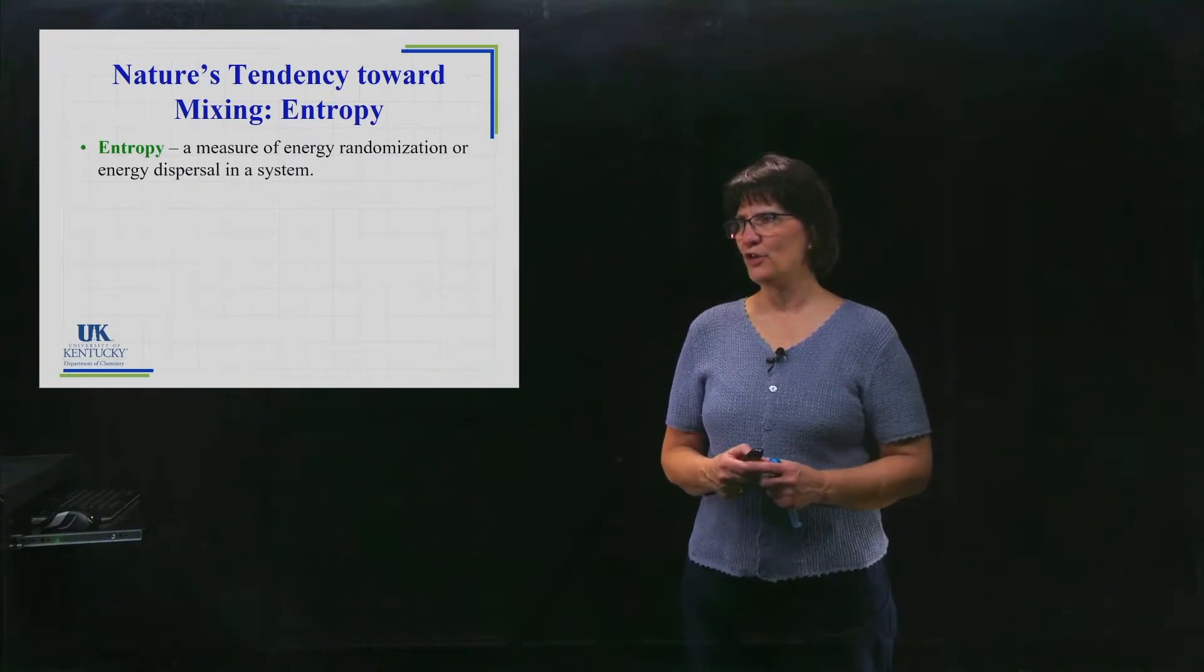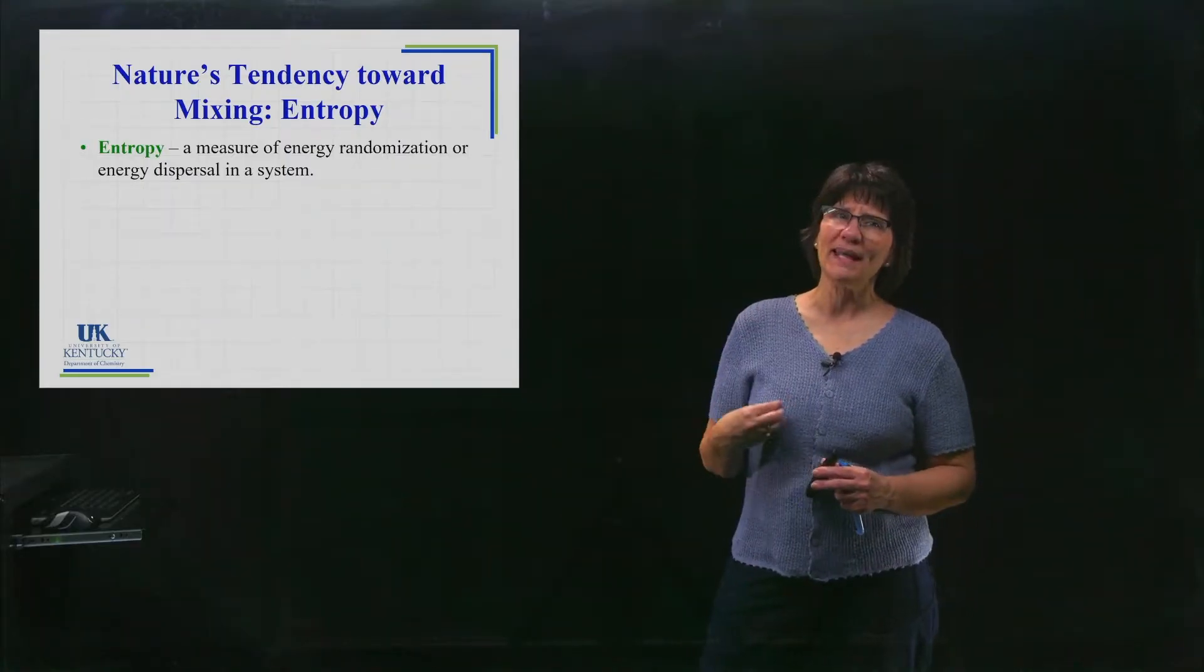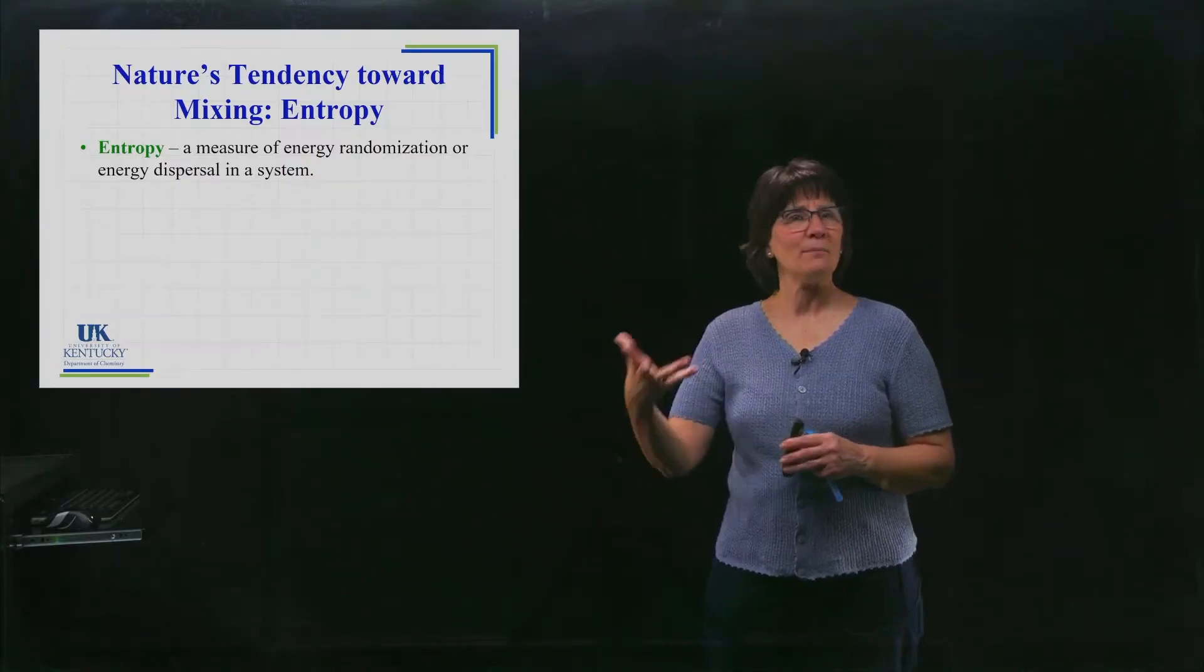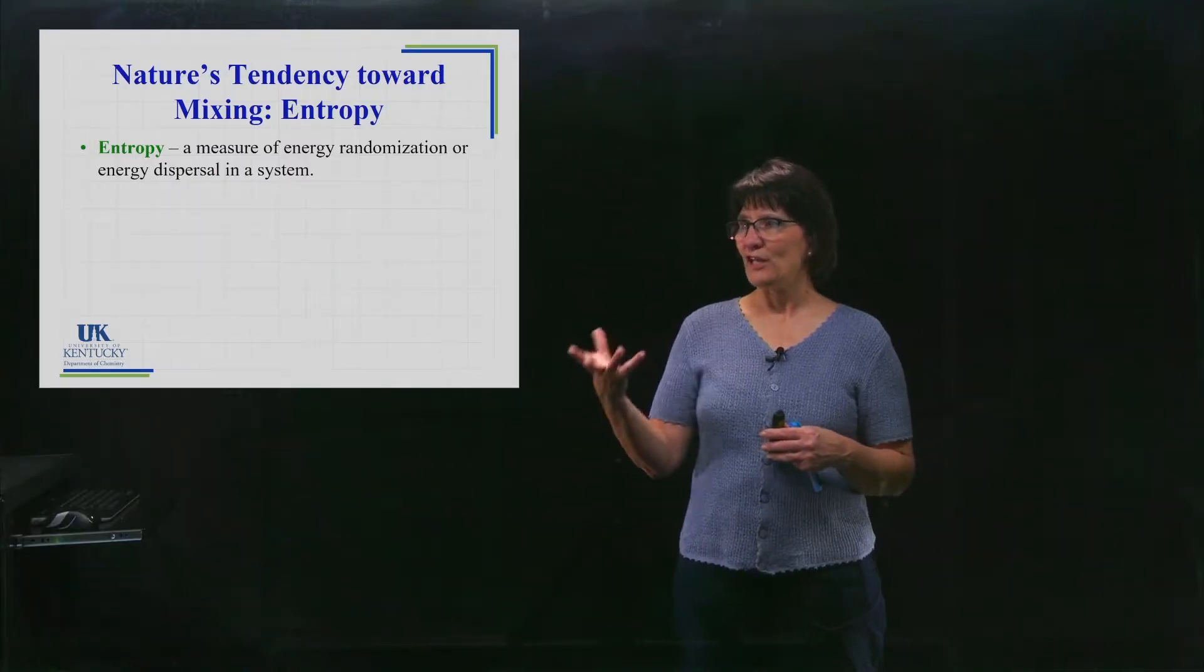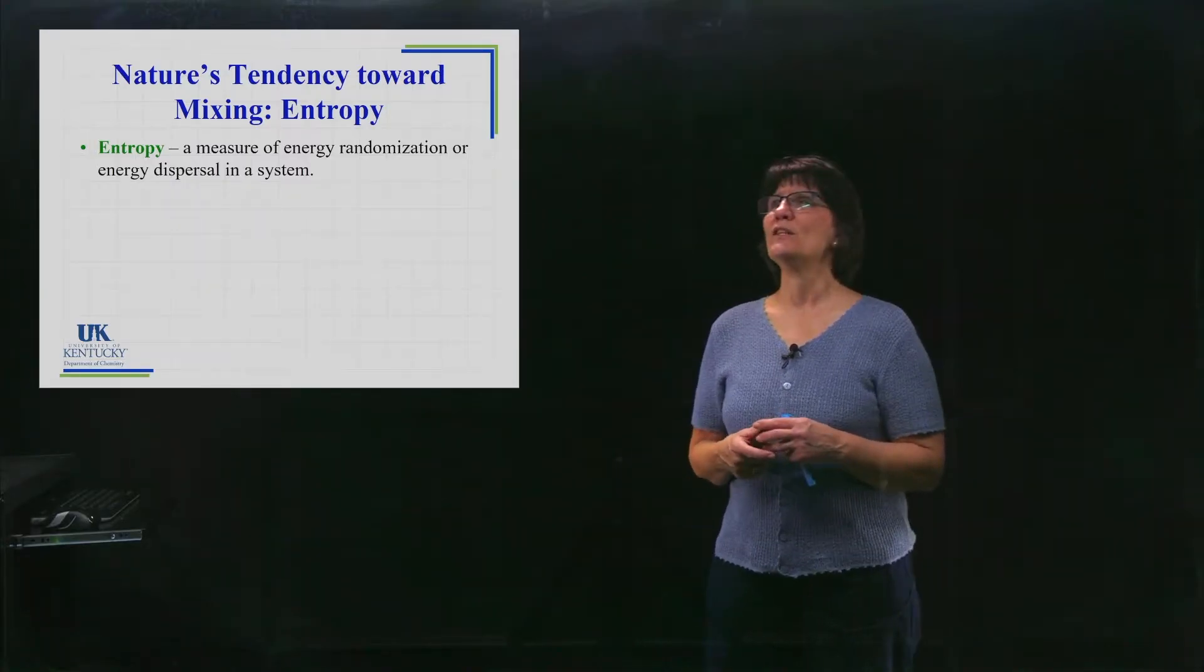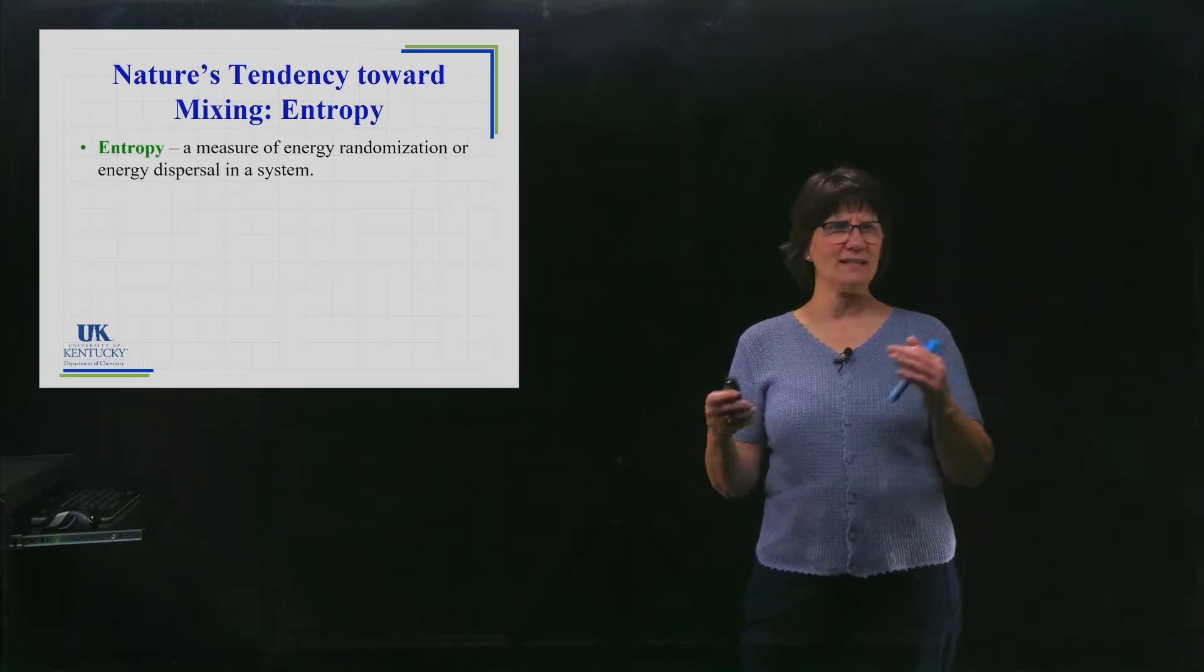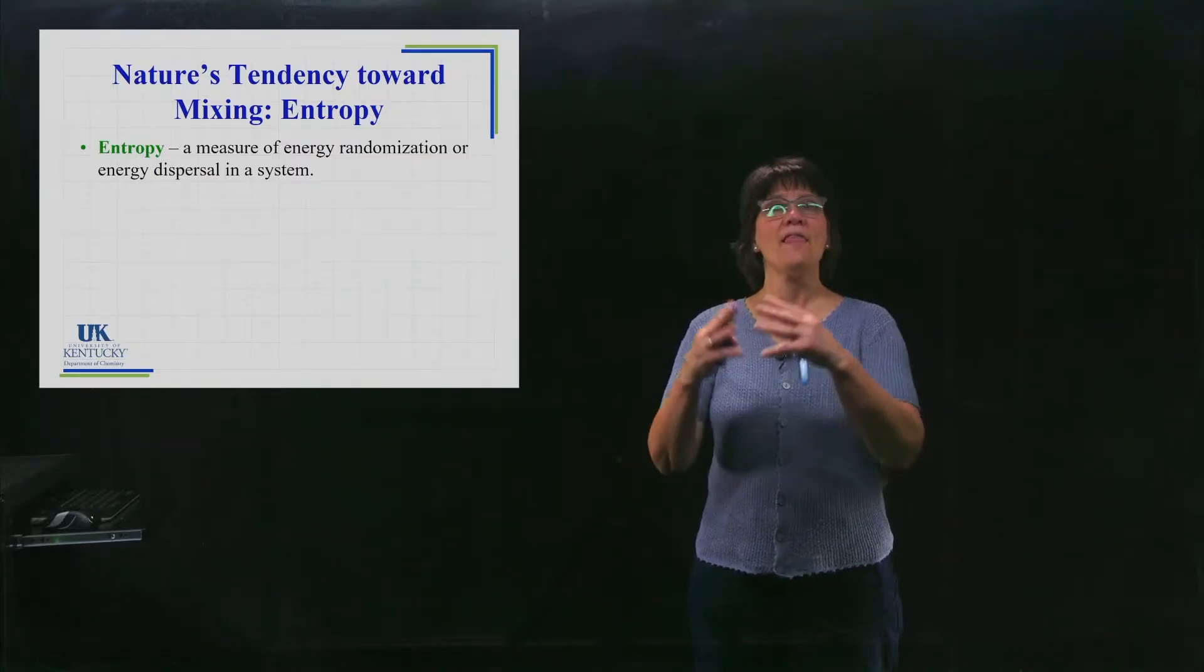Just as a reminder, one of the ways that we thought about entropy was the randomization. The more randomized it is, the more disordered it is, the more entropy it has. We talked about it in terms of microstates and maximizing the number of microstates, but it's really a tendency towards disorder, and that would be disorder for the universe if it's going to be spontaneous.